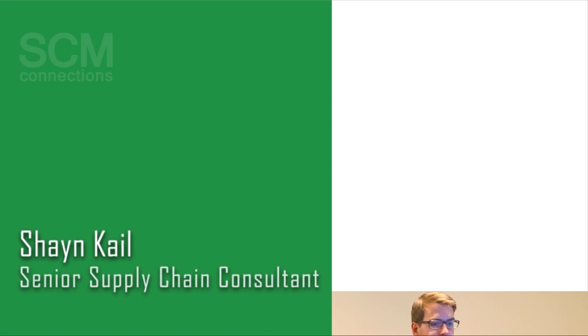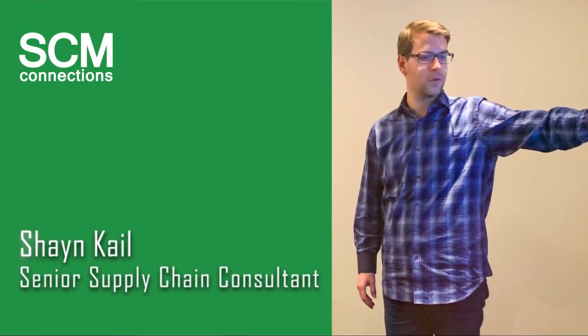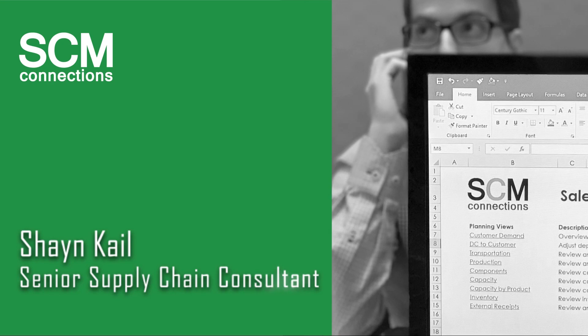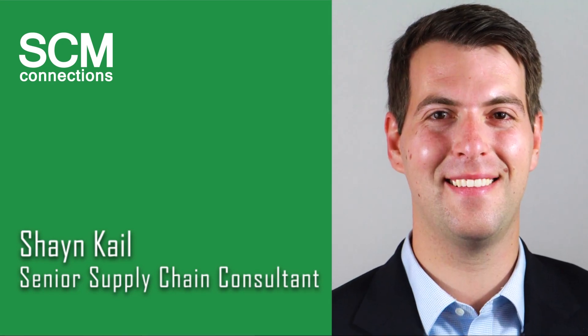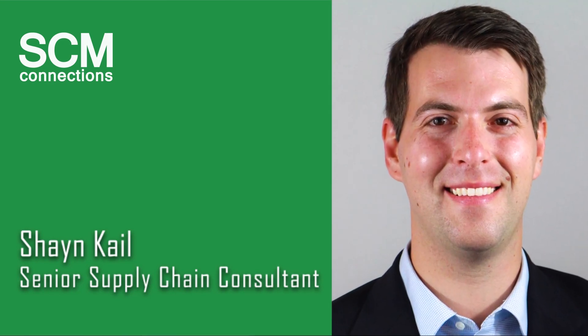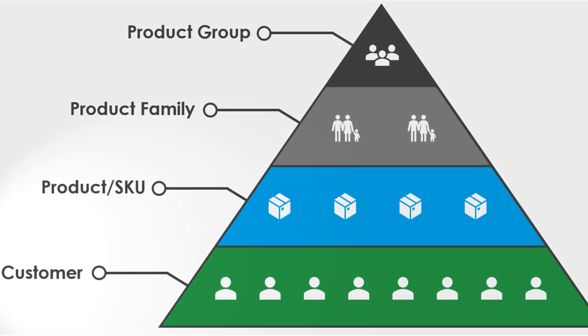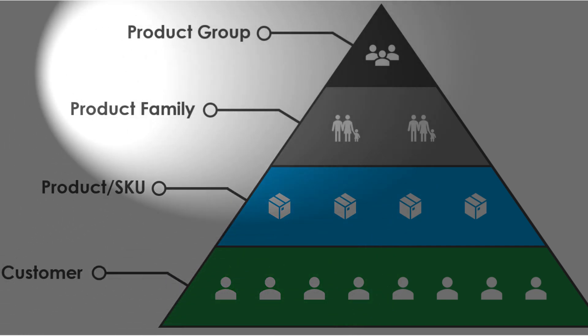Hi, I'm Shane Kale with SEM Connections. As part of our Get Smart series, I'm going to walk you through the pyramid forecasting functionality in SAP IBP. This functionality allows you to take a forecast at the top of a product hierarchy and disaggregate the forecast down to lower levels based on proportional factors, and also aggregate forecasts back up to the highest level of the product hierarchy.